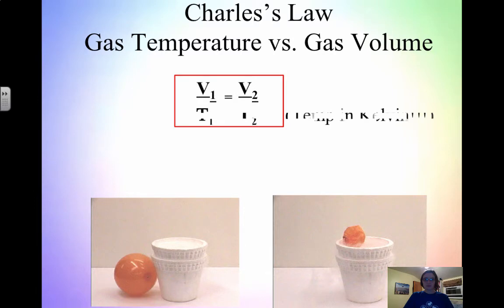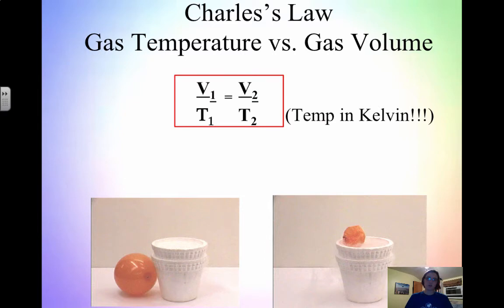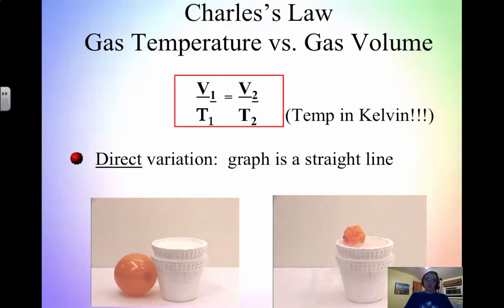With Charles' Law, to calculate, we use V1/T1 = V2/T2. That's because of the direct relationship — if you set it equal to a constant and rearrange, you get V1/T1 = V2/T2. Temperature must be in Kelvin. This is a direct variation, so it graphs as a straight line. This picture shows what happens when you put a balloon into liquid nitrogen — you are decreasing the temperature a lot, which means you have to decrease the volume.